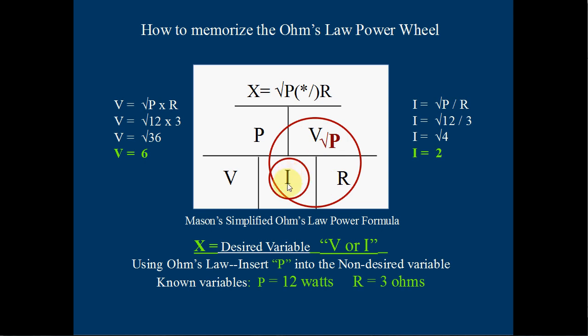And if we're looking for current, we take the square root of power divided by resistance. And that gives us 12 divided by 3. The square root of 4 is 2. So now we have 2 amps. And that really concludes this whole formula here.